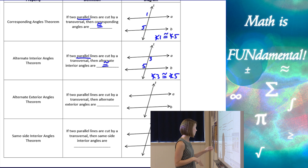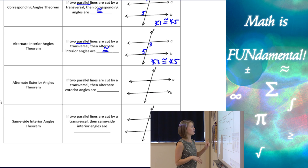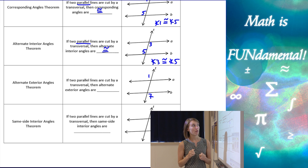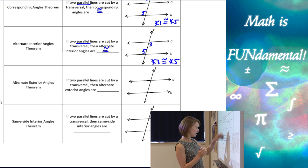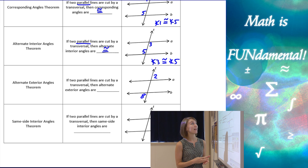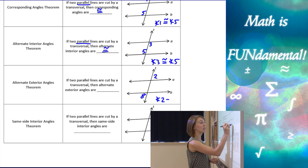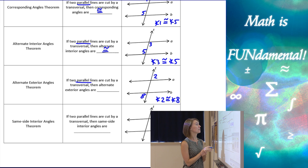Next is the Alternate Exterior Angles Theorem. Let's look at angle one and angle seven — both look obtuse. We could also look at angle two and angle eight, which are both acute. Either way, they look congruent, and the theorem states that if two parallel lines are cut by a transversal, alternate exterior angles are in fact congruent.